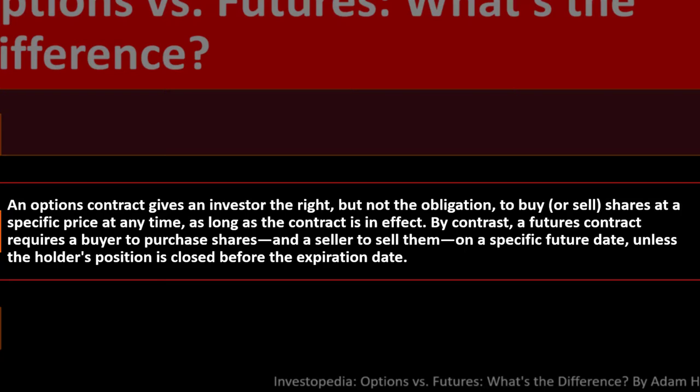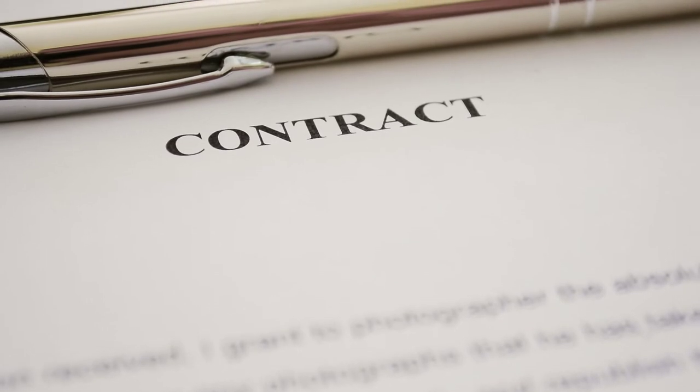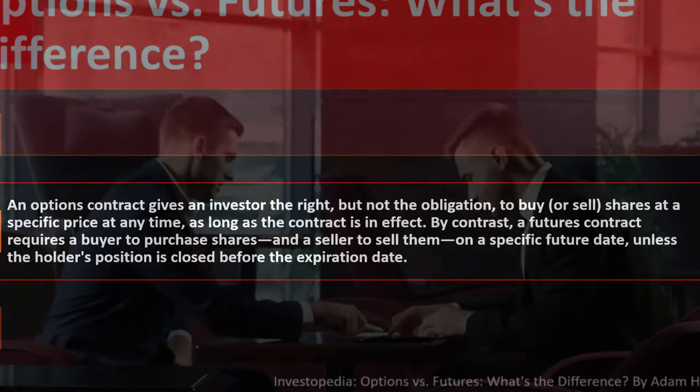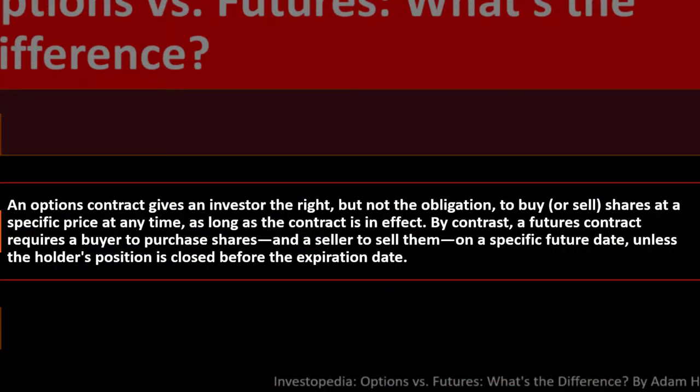By contrast, a futures contract requires a buyer to purchase shares and a seller to sell them on a specific future date, unless the holder's position is closed before the expiration date. So the futures contract represents a commitment for a trade to happen in the future. It gets complex to value given that it's a contract for something to happen later.